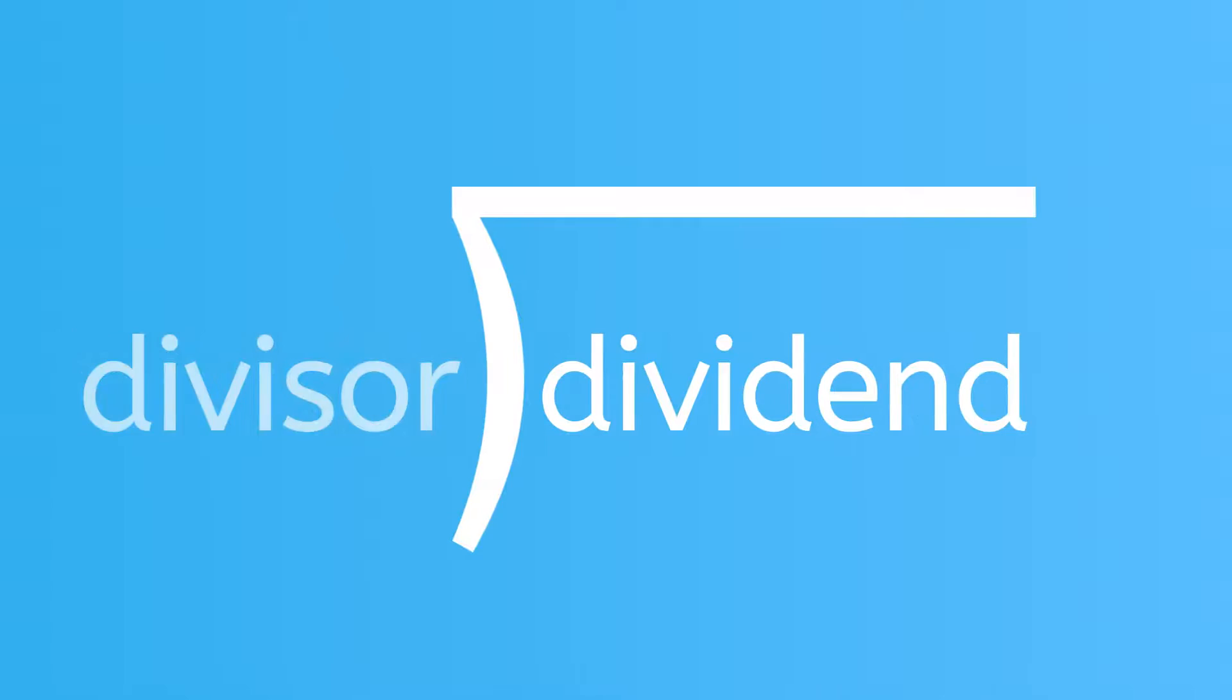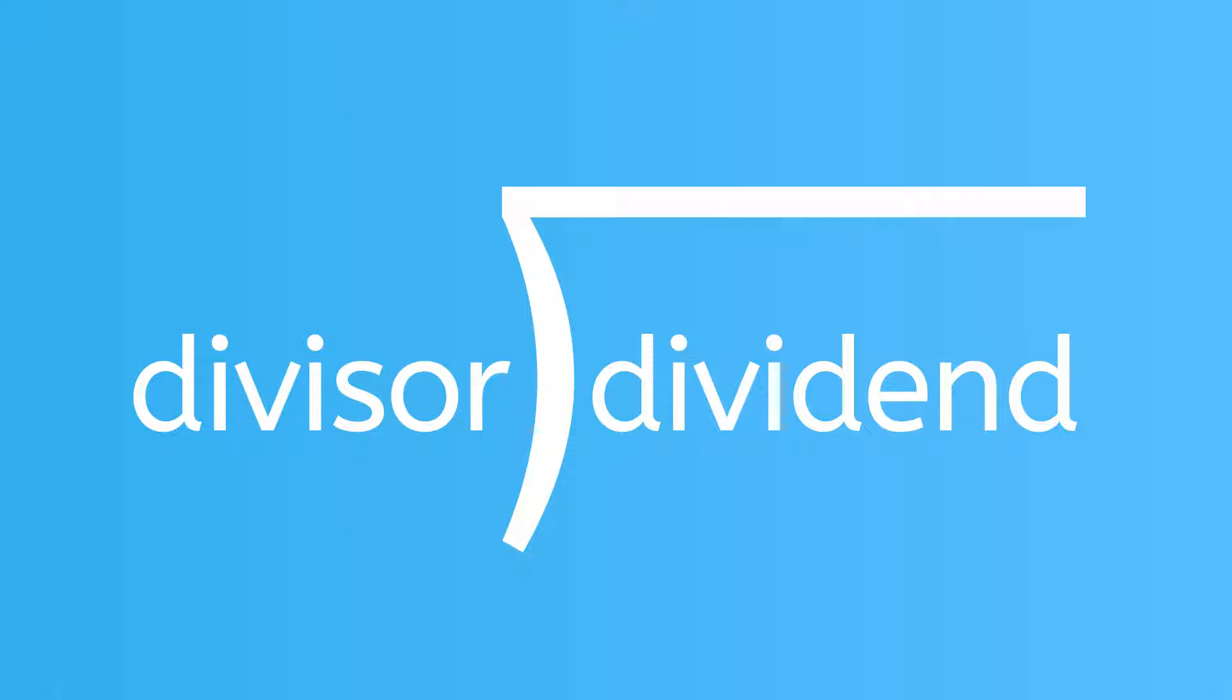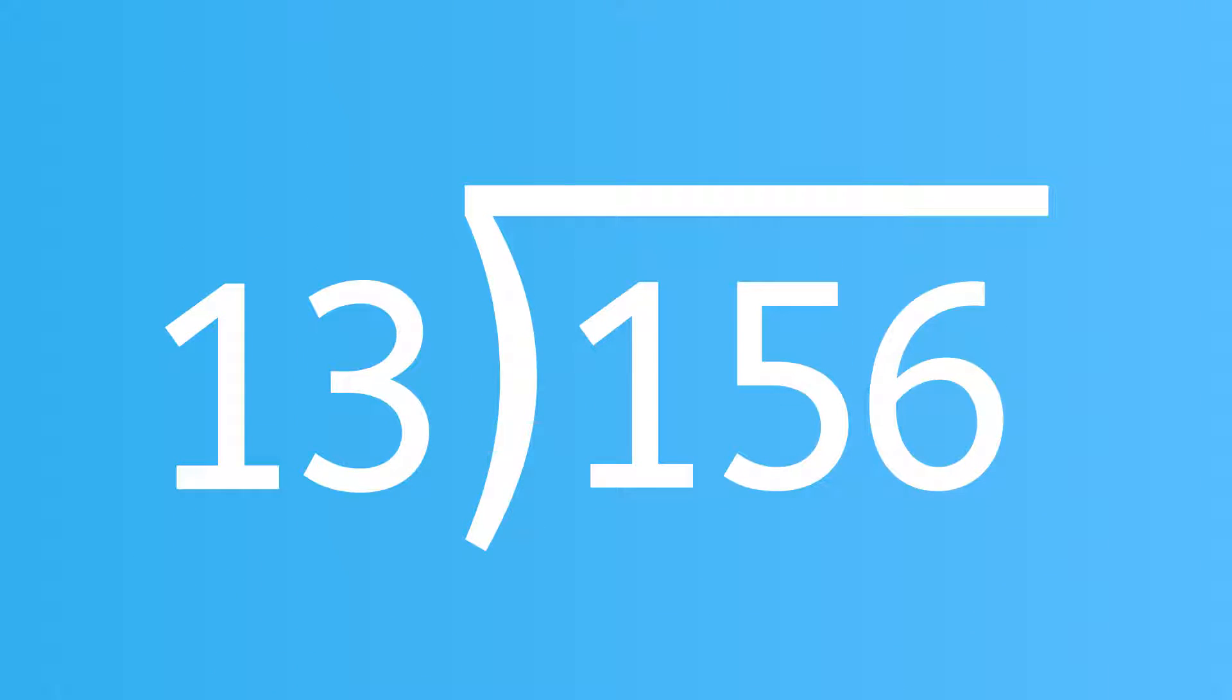Do you remember learning that division problems can be written two different ways? The first way uses this division symbol, but the second uses the long division symbol. This is a short vertical line and a long horizontal line. The dividend, or the number to be divided, goes inside the symbol. The divisor, or the number you're dividing by, goes outside of the symbol. Let's write a long division problem to practice this.